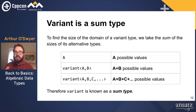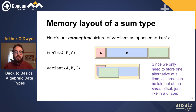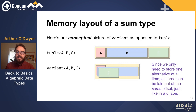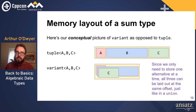Here's the memory layout of a sum type versus a product type. A tuple of A, B, and C holds an A, then next to it a B, then a C. A variant, on the other hand, only needs to store one of its alternatives at any single time — it can hold an A or a B or a C, and reuses the same memory for each. They're laid out one on top of the other, just like in a union, all at offset zero.